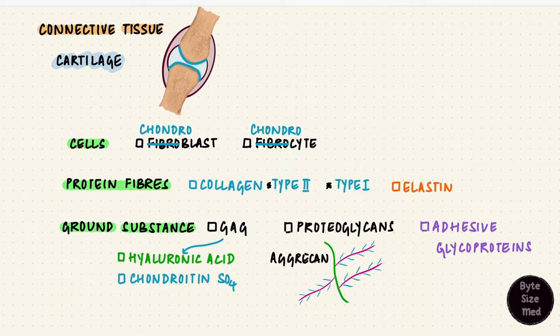But this structure is negatively charged, and its branches make it large, occupying space. This helps attract water and keeps the ground substance and so the extracellular matrix well hydrated. Thus the matrix forms this firm hydrated gel containing these cells and fibers.